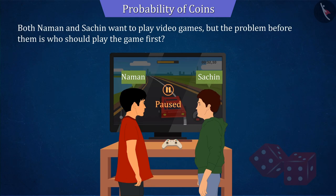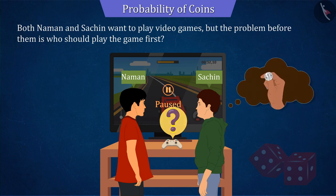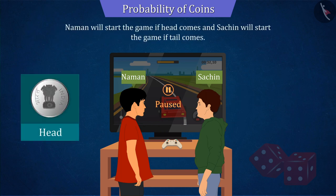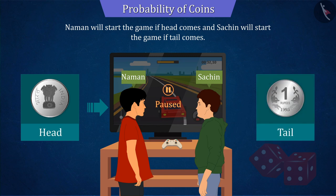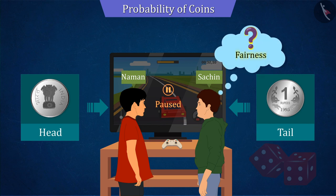Both Naman and Sachin want to play video games, but the problem before them is who should play the game first. They decide to make this decision by tossing a coin, and decided that Naman will start the game if the outcome is head and Sachin will start the game if the outcome is tail. But Sachin wants to know if doing so is a fair decision.